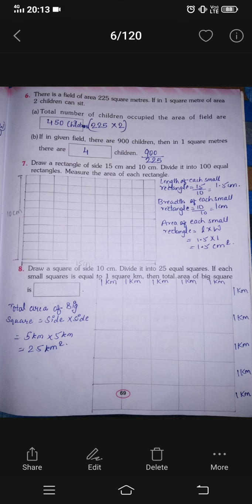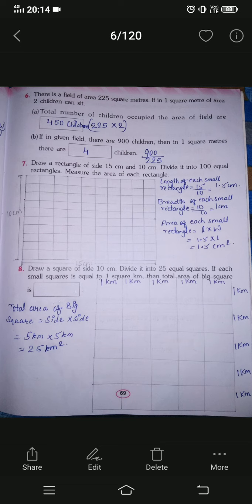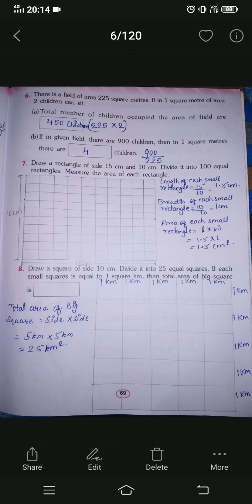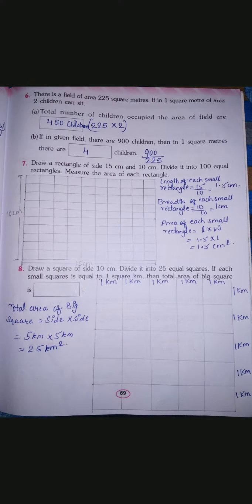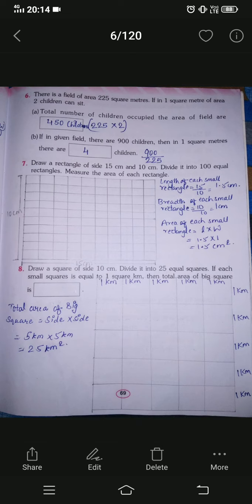To divide the big square into 25 equal squares, make five lines horizontally and five lines vertically, and you will get 25 equal squares inside. They say if each small square equals one square kilometer, what is the total area of the big square? You can count: 5, 10, 15, 20, 25 — the last row — so we have 25 equal squares.